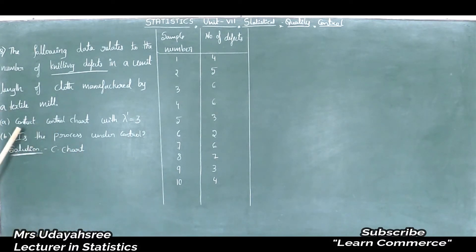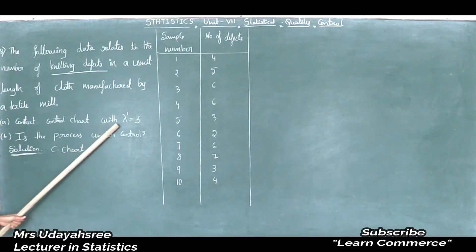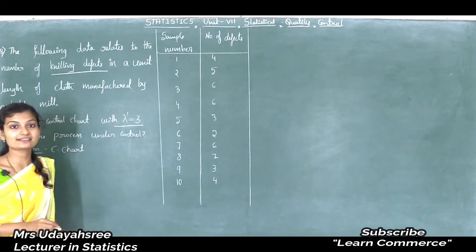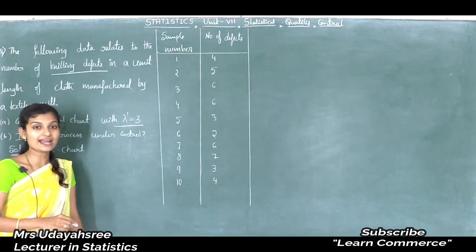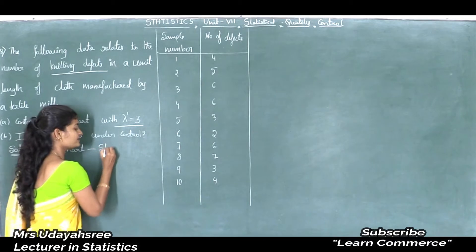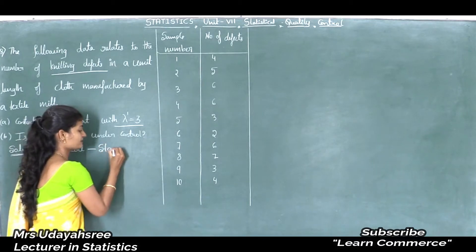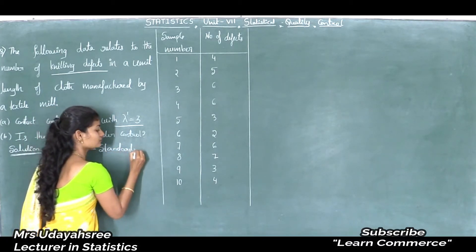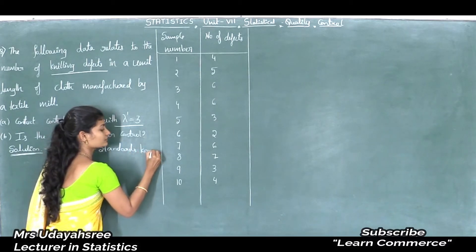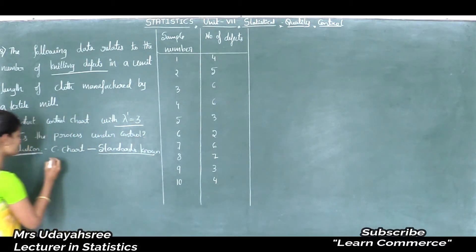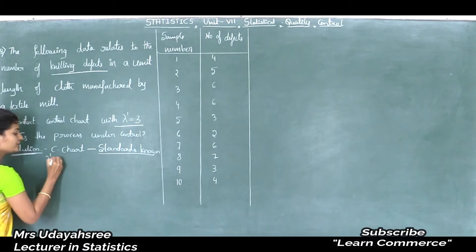See the first sub-question: construct a control chart with lambda dash equal to 3. Lambda dash equal to 3 means standards are given, that is the standards known case. So this is a C chart in the standards given case. The given observation is lambda dash equal to 3.